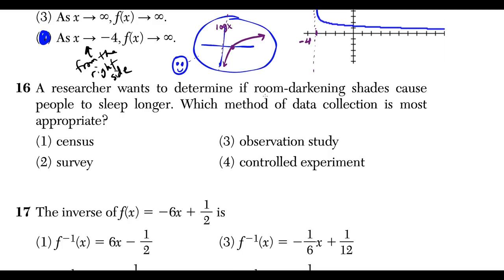Question 16: a researcher wants to determine if room-darkening shades cause people to sleep longer. A controlled experiment works best — you'd put some people in a room without the shades and some with the shades to see if there's any difference in sleep quality. Choice 4 is the answer.